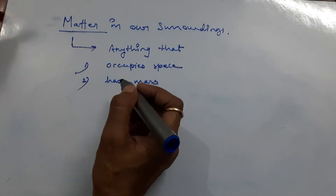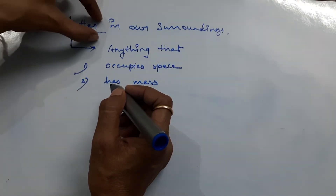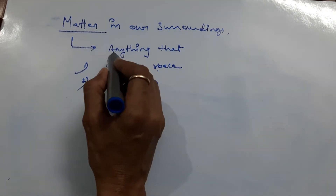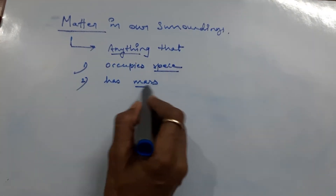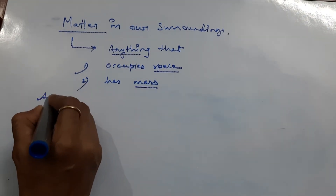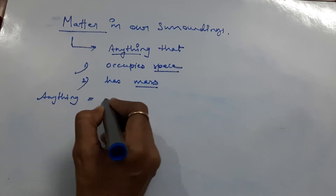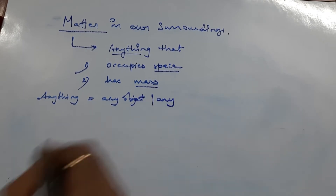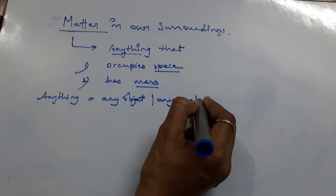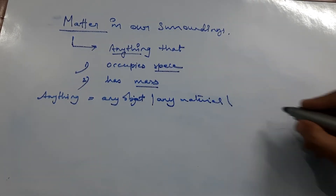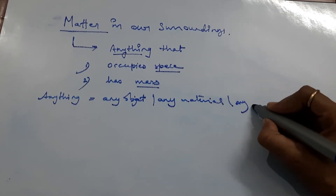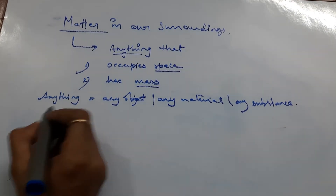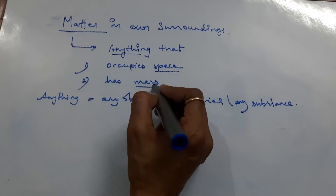So with the word matter, three other words are related. What are those three words? The first word is 'anything', the second is 'space', and the third one is 'mass'. Anything here is any object, any material, or any substance.